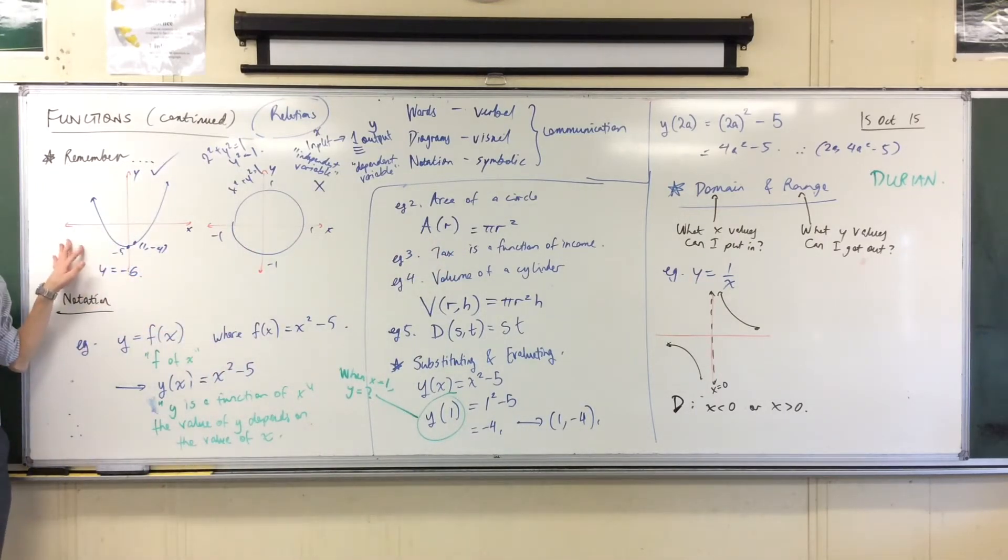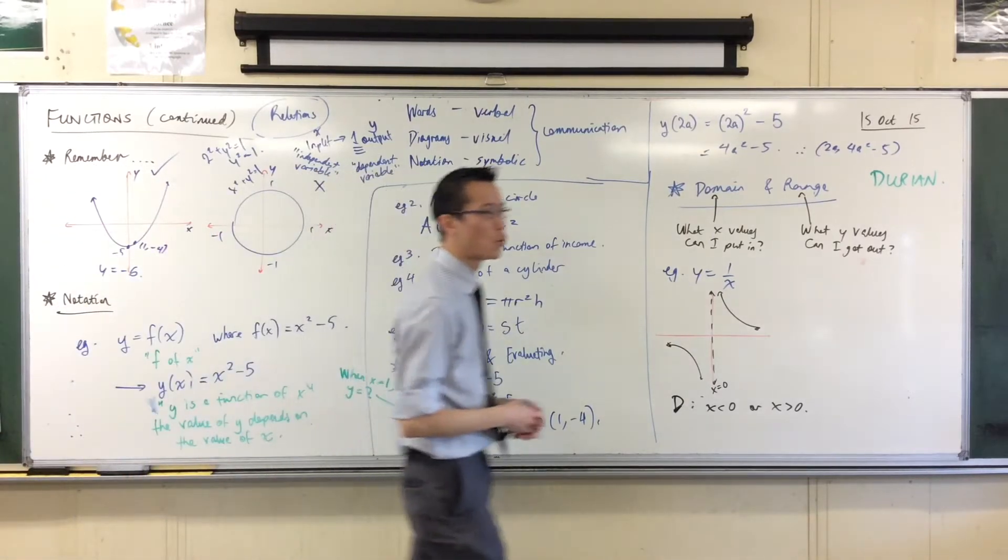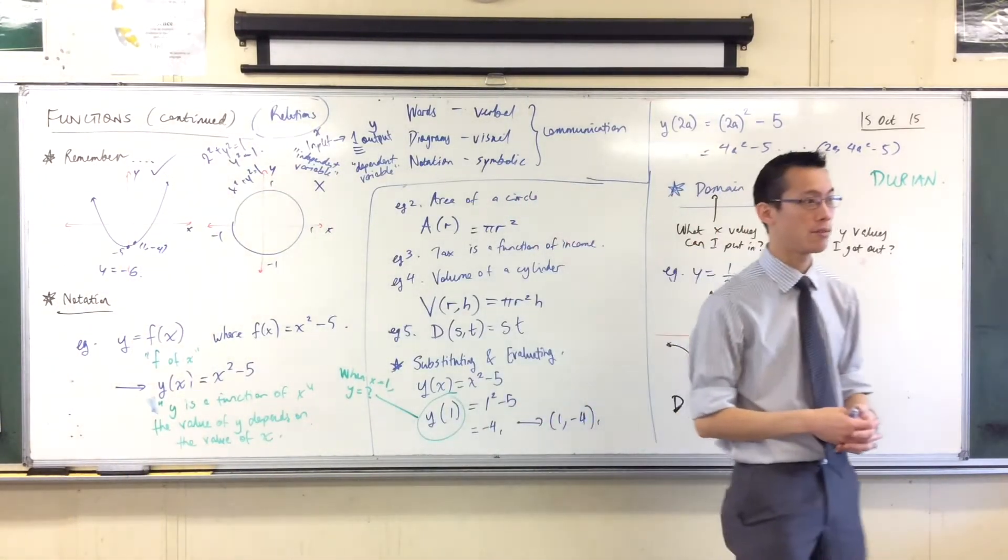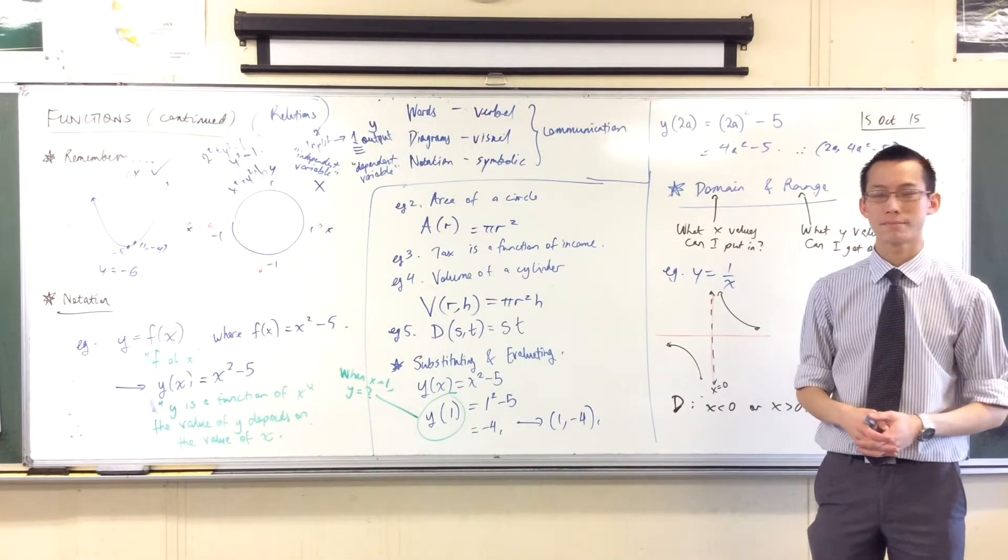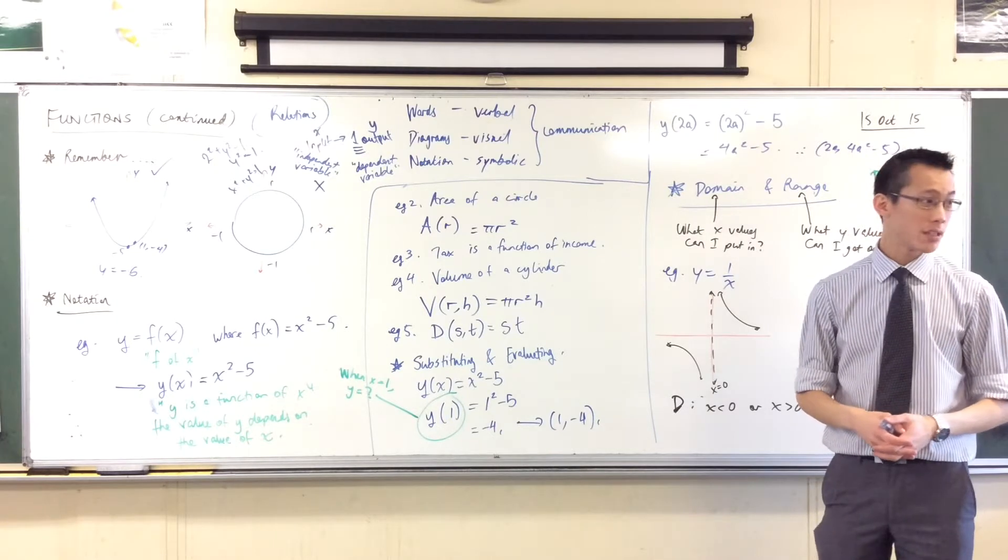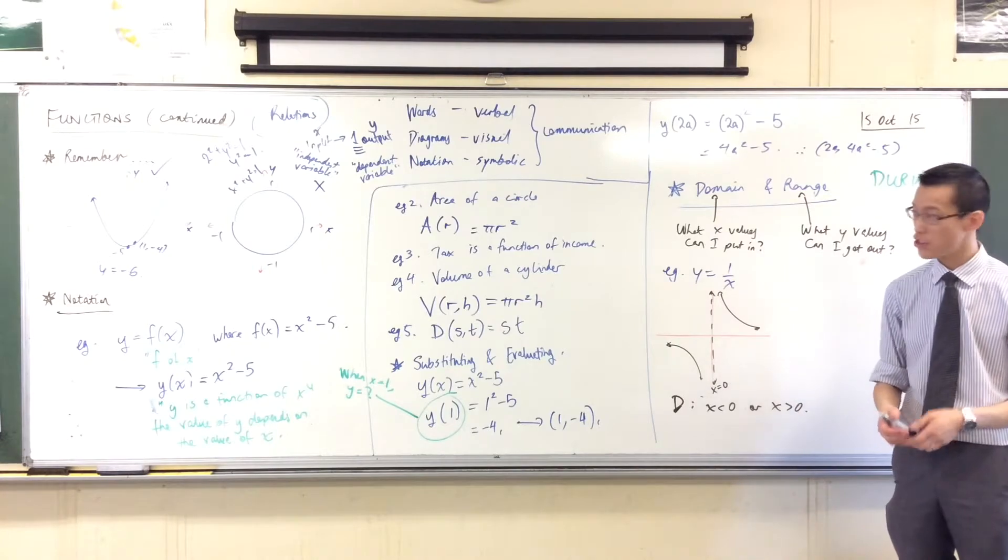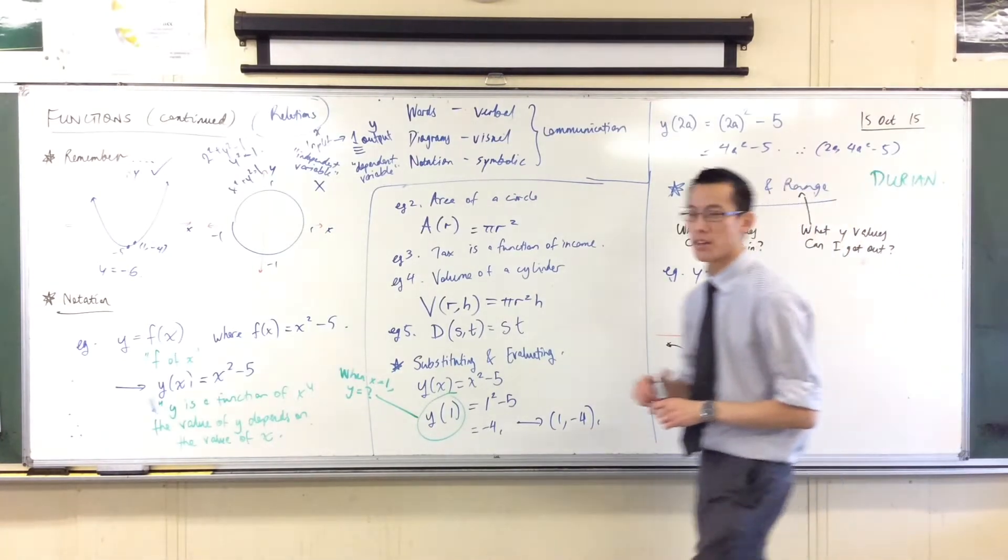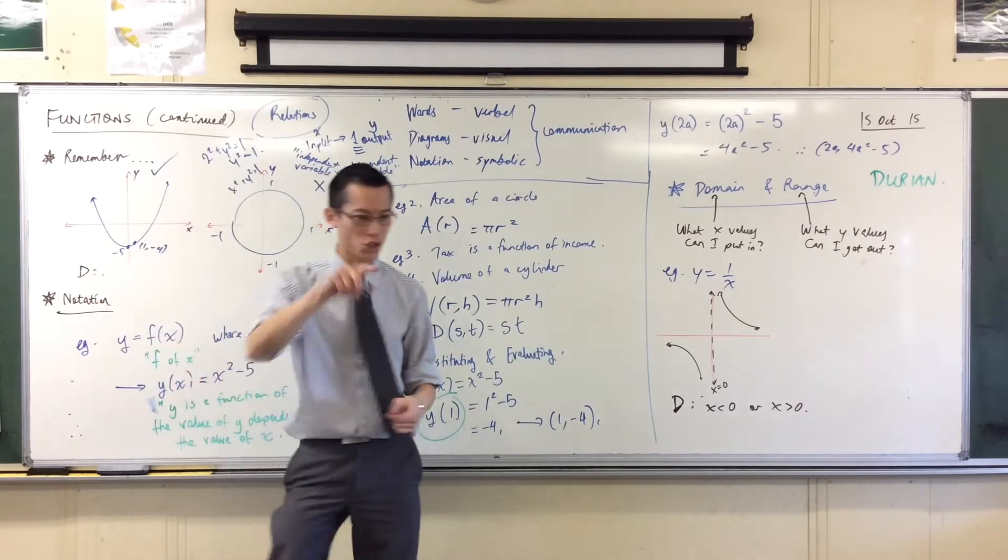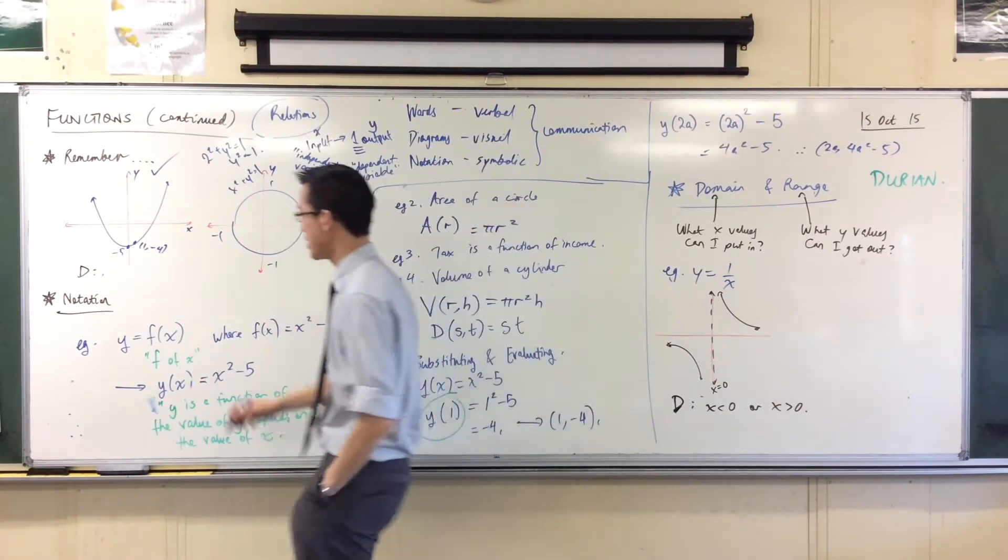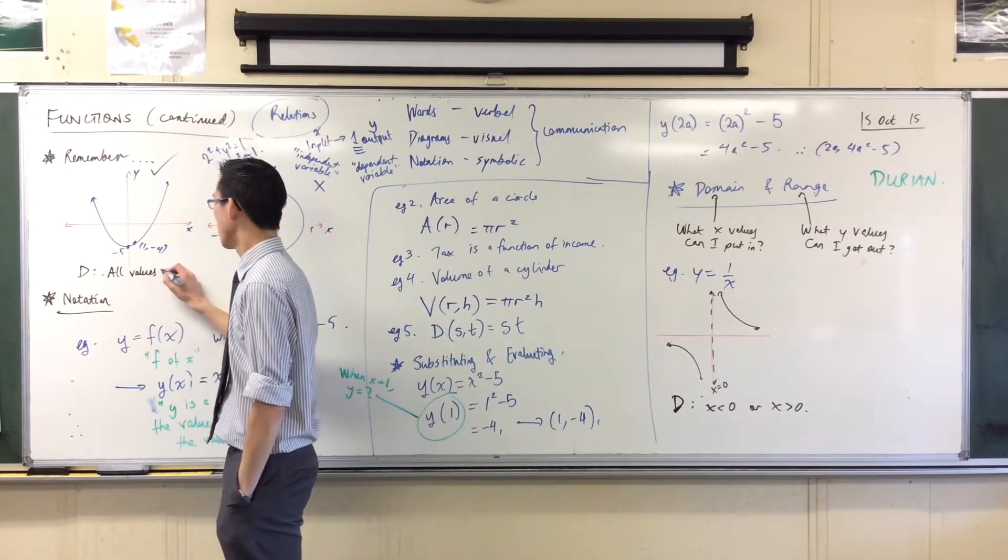That's an interesting example. Come back to the parabola we drew over here. What value of x, what domain will work for our parabola over there? What values of x can I put into that? And the answer is, unlike this guy, you can put in anything you'd like. You can put in any value of x. So the way I would say that is, the domain for this guy, so just go back to where you drew your parabola. The domain for this is all values of x.